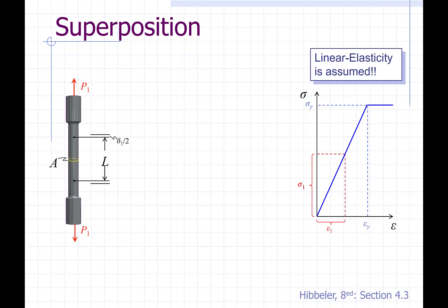Let's start by applying a load P1. We can see the results of that load being applied. We now have a displacement applied to the specimen of delta 1, and a resulting stress and strain within the specimen, shown on the graph to the right, of sigma 1 and epsilon 1 for the stress and the strain.